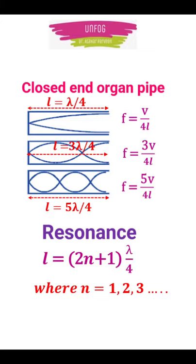In a closed pipe, resonance occurs at l equals 2n plus 1 into lambda by 4, because here odd integral multiples of first harmonic are allowed.